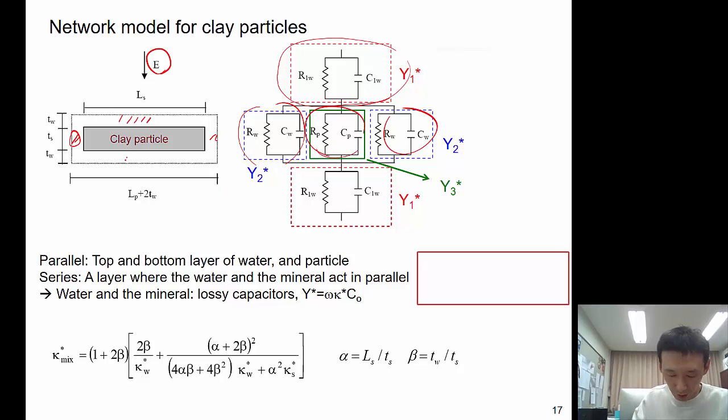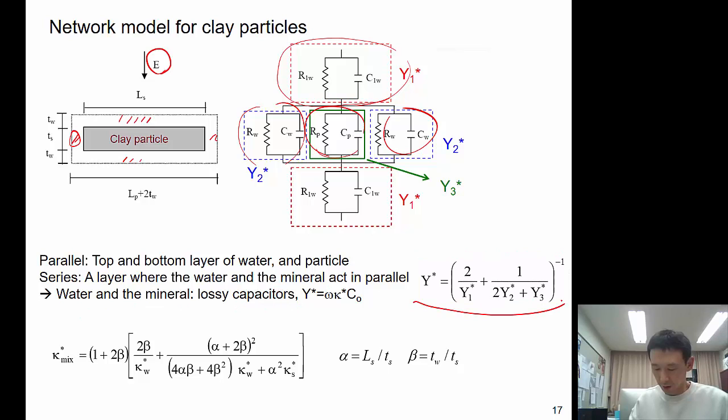In top and bottom, parallel top and bottom layer of water and particle. This is a layer where the water and the mineral act in parallel. So this is the result of that: Y1 and Y2, and the mineral is Y3. Then it becomes like this.